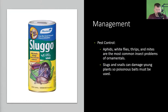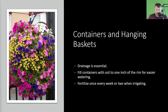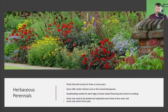With insect and pest control, aphids, whiteflies, thrips, and mites are the most common insect problems of ornamentals. Slugs and snails can damage young plants, so poisonous baits must be used. With containers and hanging baskets, drainage is essential — they need water but don't like wet feet. Fill containers with soil to one inch of the rim for easier watering. Fertilize once a week or every two when irrigating, and these baskets will last you throughout the entire season.